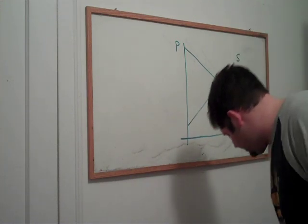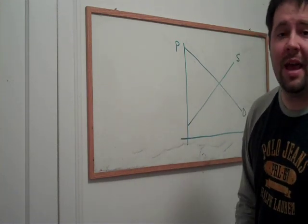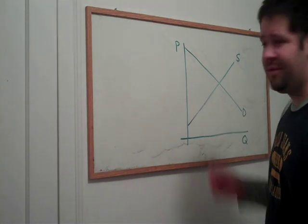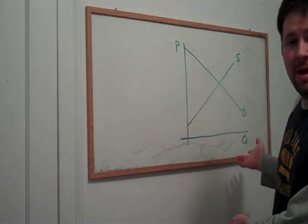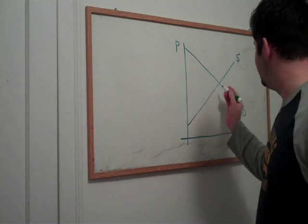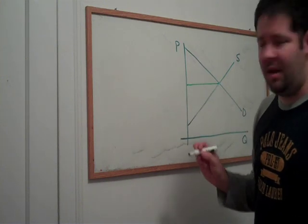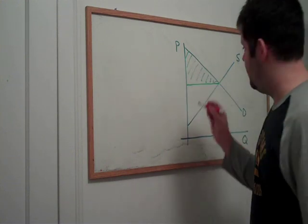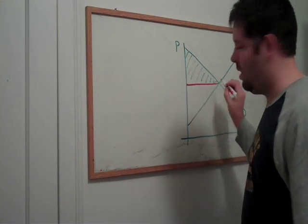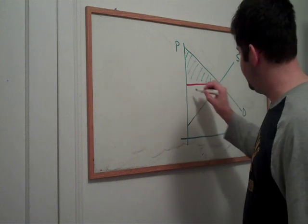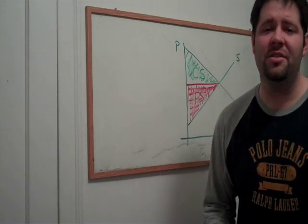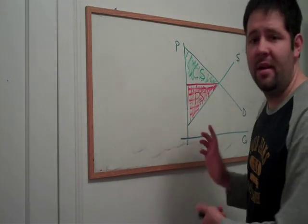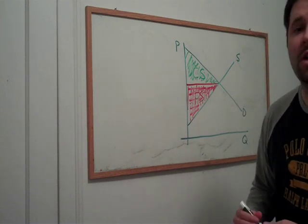In the last video, I illustrated consumer surplus and producer surplus. As a recap, here's a supply and demand diagram. The consumer surplus was the area above the equilibrium price up to the demand curve. The producer surplus was the area below the equilibrium price down to the supply curve. Taking these two areas together, we get an object that we call total surplus.